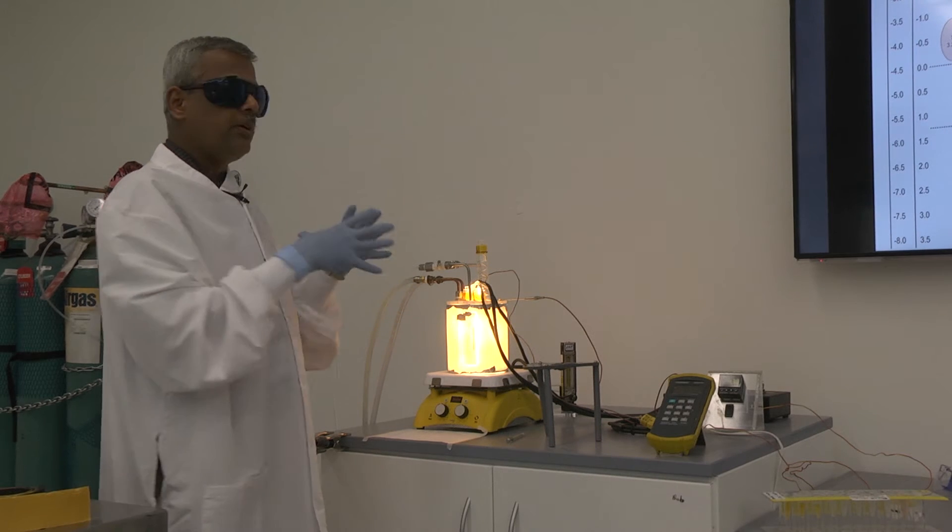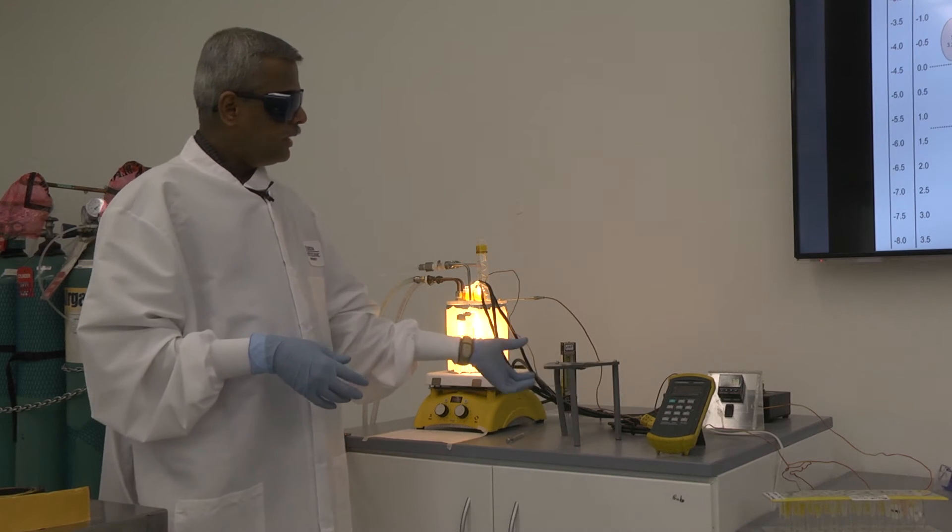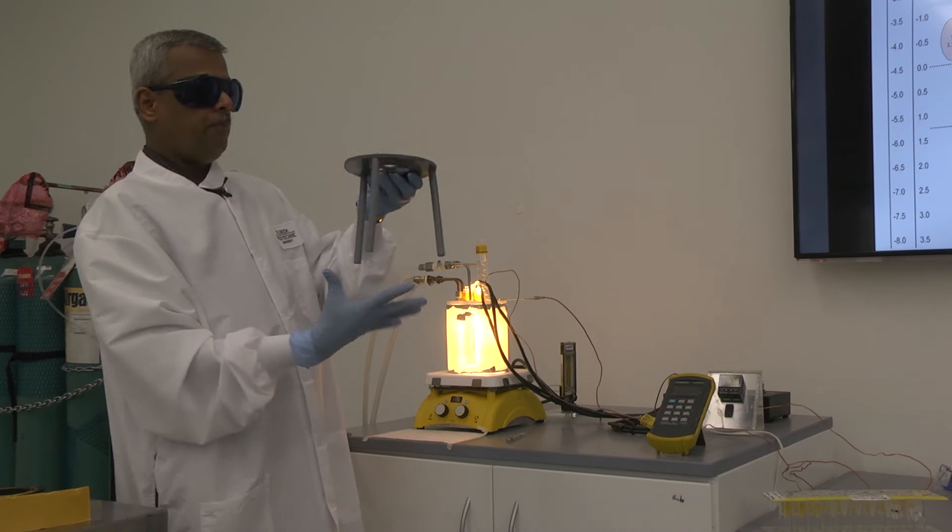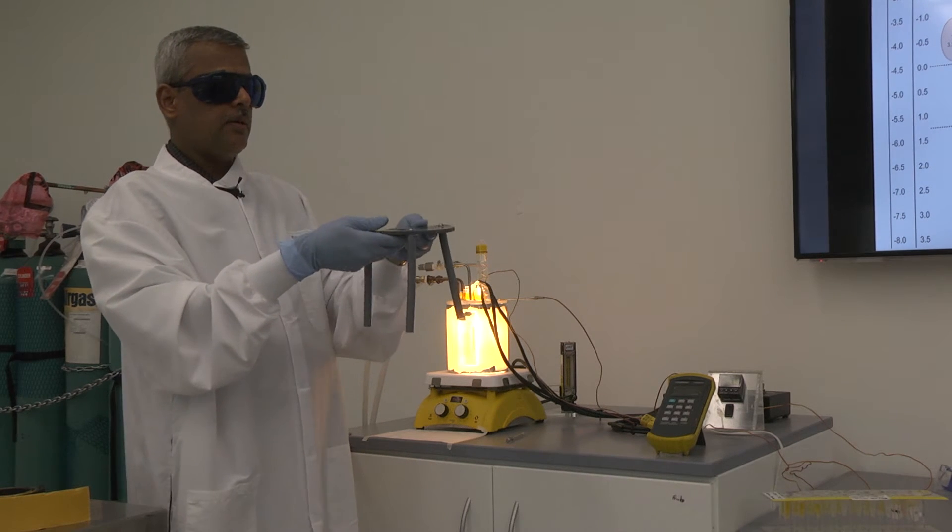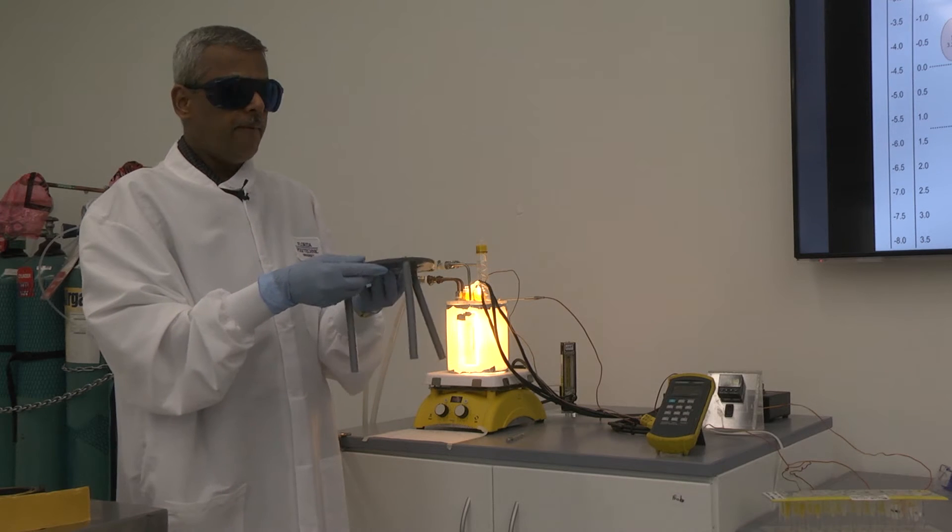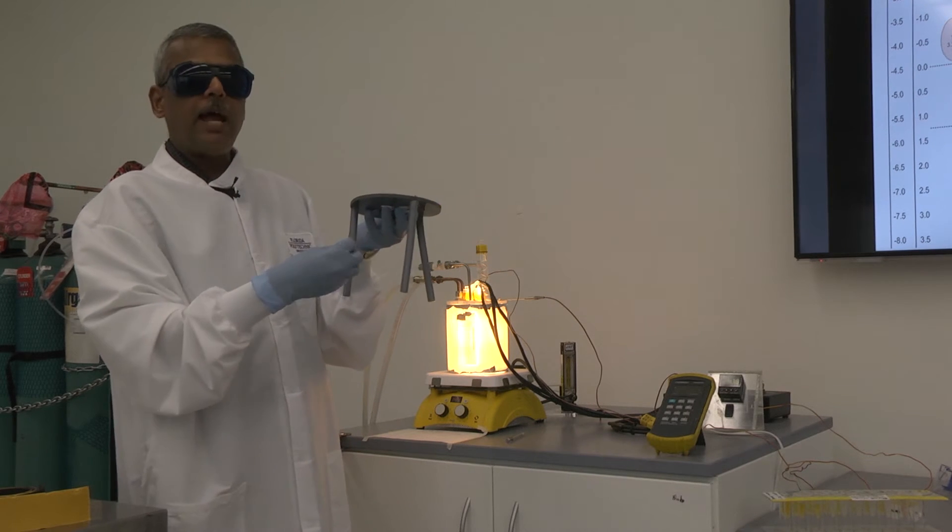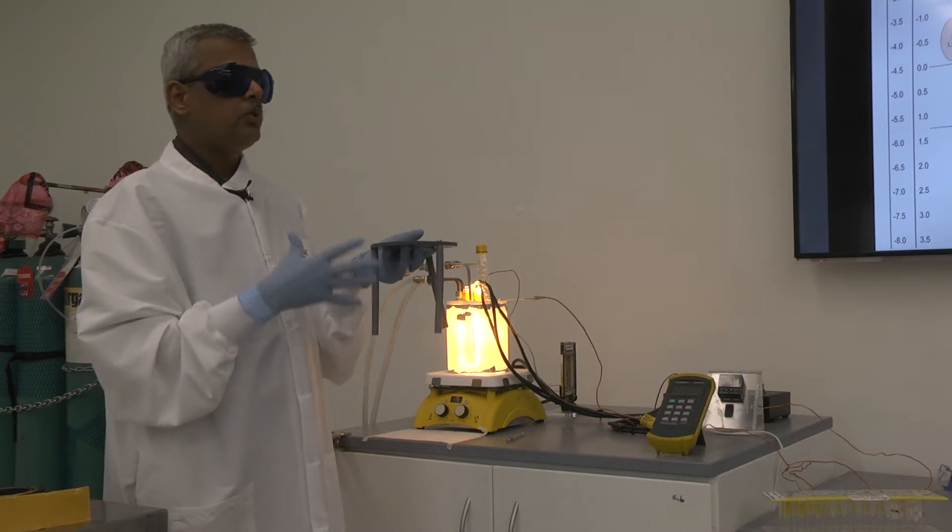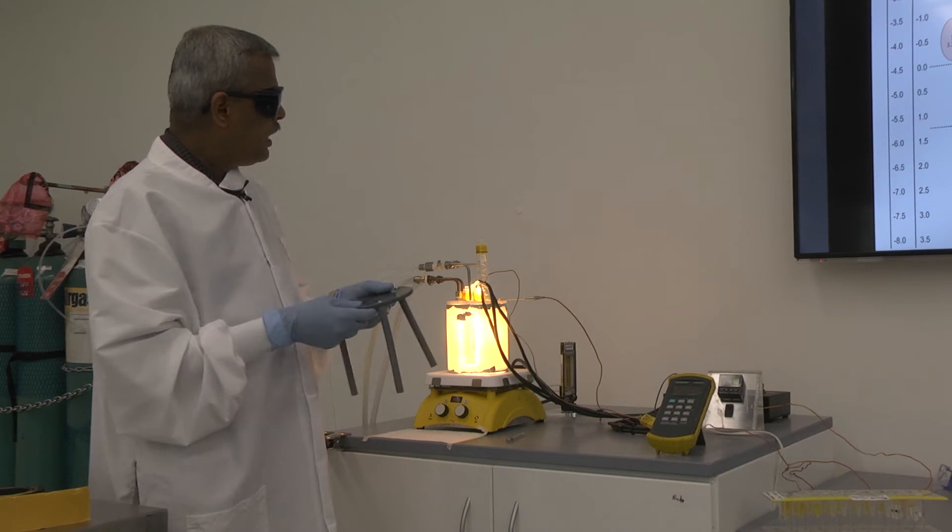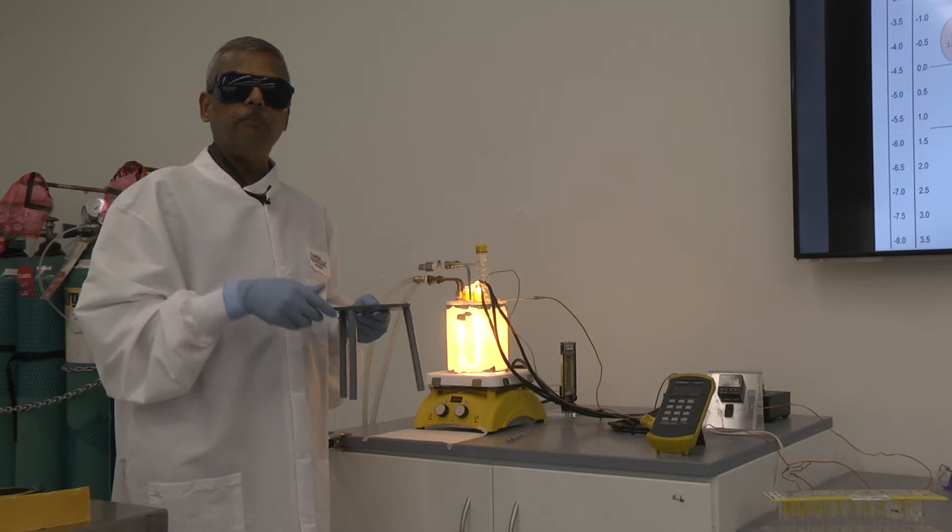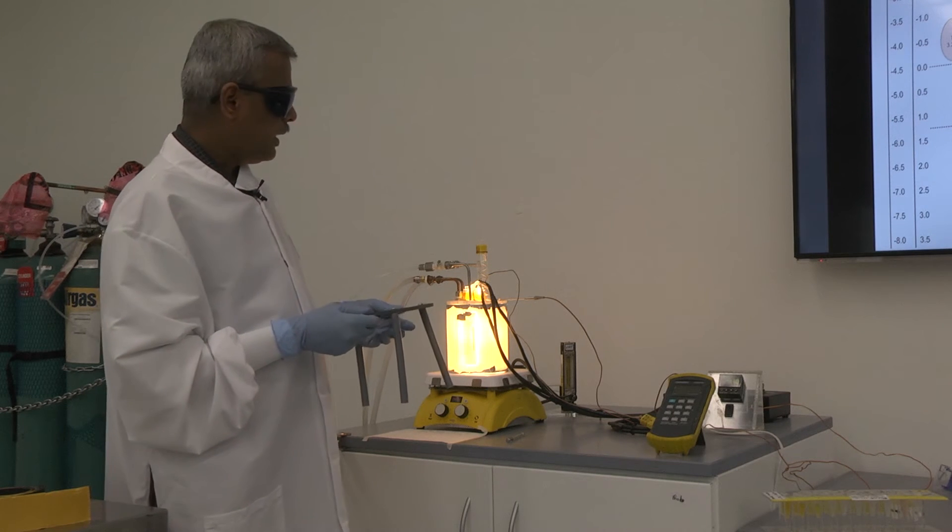The earlier structure had the Pyrex beaker going inside. This is the old model where much of the UV light was exposed to the outside, so lab partners or the lab team had to use ultraviolet goggles.